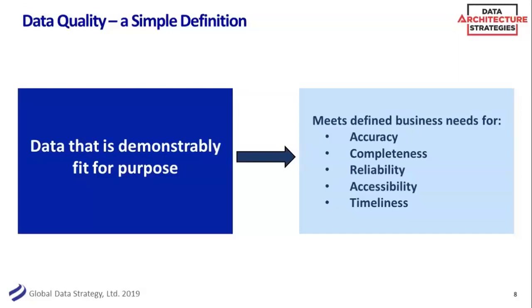The second part — 'fit for purpose' — means data quality isn't an absolute. There isn't a single organization out there that can say all their data is 100% accurate, 100% complete and reliable everywhere. Fit for purpose basically means that depending on its uses, the data is good enough for the use it's put to. If you're doing a monthly finance report and the data is two weeks out of date before it's published, that doesn't really matter. But if you're working in a transactional system where you need data to be right and up to date, then the quality needs to be pretty much 100% right from the start.